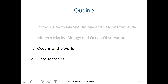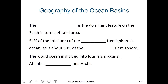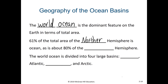Let's talk about the oceans on the surface of planet Earth. It turns out that these oceans are actually all connected to each other, and we call this collected feature the world ocean. The world ocean is the dominant feature on the surface of planet Earth in terms of total area. In fact, 61% of the total area of the northern hemisphere is covered in ocean, and about 80% of the southern hemisphere is also covered in ocean.